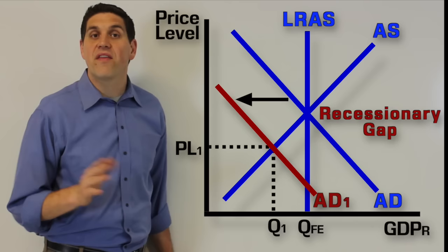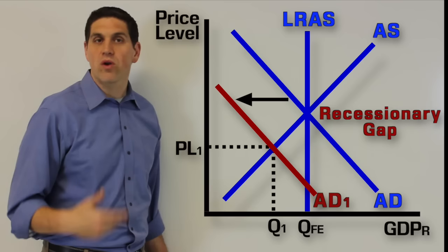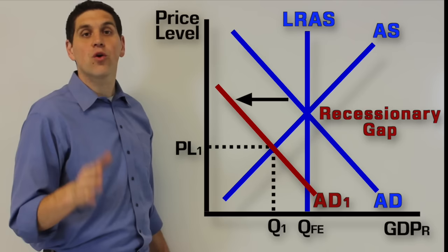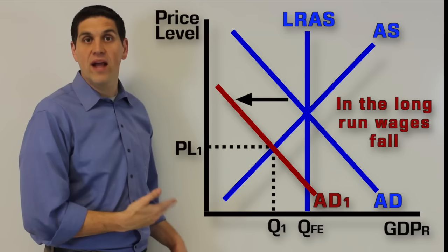Now this is going to happen in the short run, but what's going to happen in the long run? Well, we could do some sort of government policy to try to close the gap, or we can let the economy fix itself. The economy is self-correcting over time. So eventually, if we had a recession, wages will fall and the prices of resources would fall, and that means aggregate supply would shift to the right, putting us back at full employment.